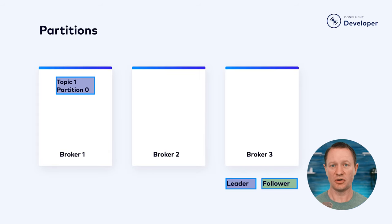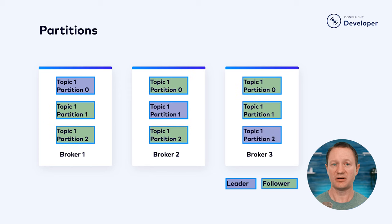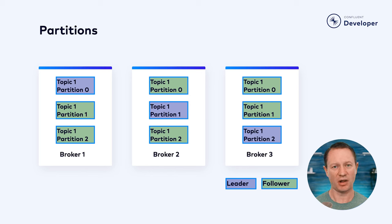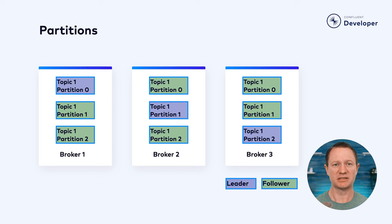Each partition has a leader node handling all its read and write requests, and follower nodes that replicate the data for fault tolerance and high availability. You can run a cluster without having followers, but you run the risk of losing data. Leaders and followers help in fault tolerance and data replication. These partitions are spread across different brokers. If one of these brokers goes down, a new leader is selected from the followers.